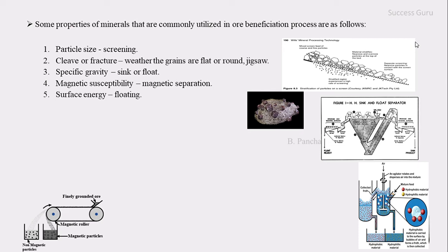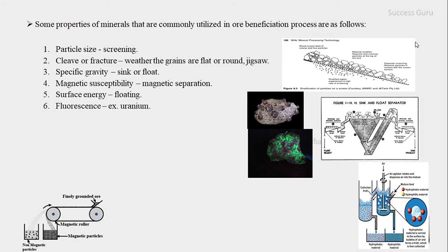The next property is surface energy. Some types of minerals may join together and form a froth or clog, leading to the upliftment of specific kinds of minerals that can then be separated easily. According to surface energy, a mineral may float or sink, and this property can also be used for the ore dressing process.